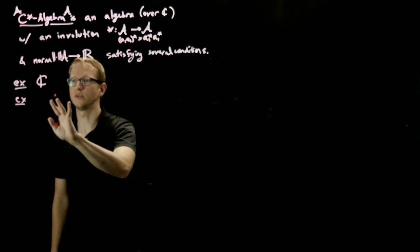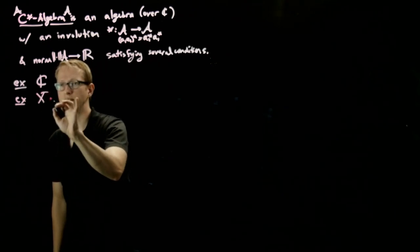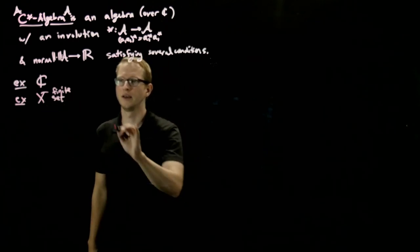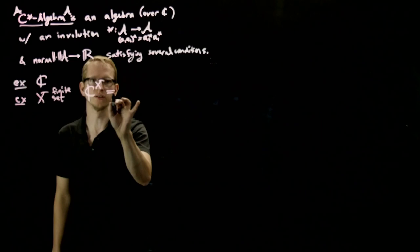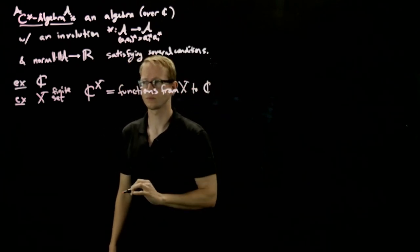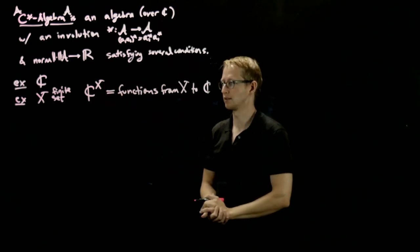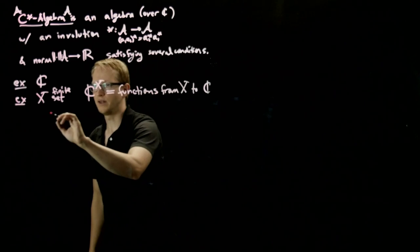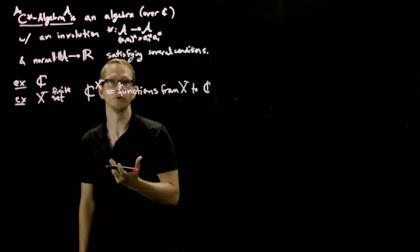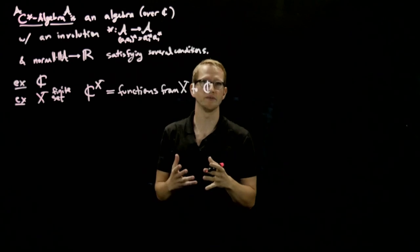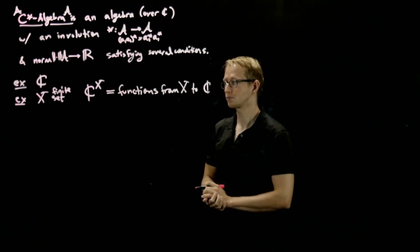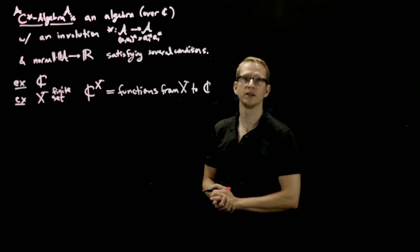Another closely related example: if you take X to be any finite set, we can look at the set of functions from X to C. We can take the norm — there are many ways to define it, but for instance we can take the supremum norm. That's going to be the supremum of a given function: take the absolute value of that function point-wise using the norm on C, and then take the maximum of those values.